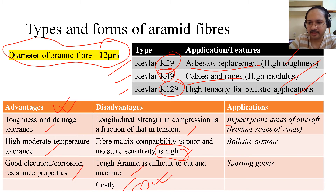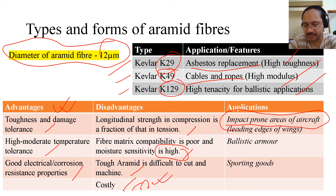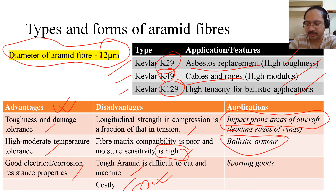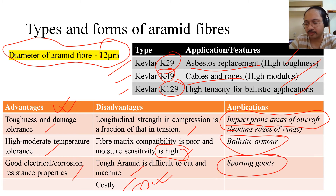Applications include impact-prone areas of aircraft, such as the aircraft nose or the leading edges of wings, which are given Kevlar reinforcement. Other applications are ballistic armor for impact resistance, and sporting goods.